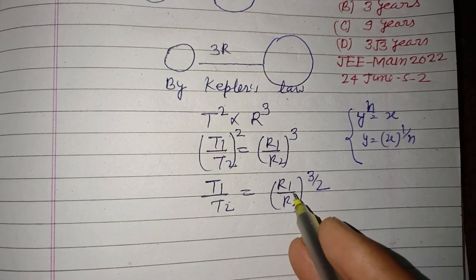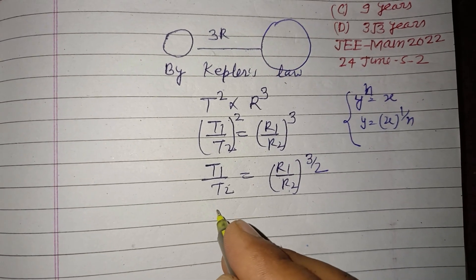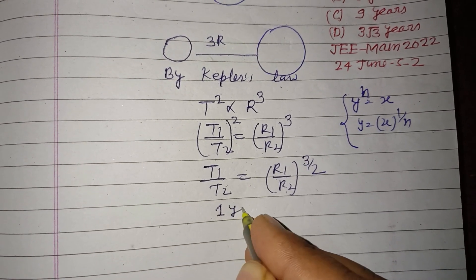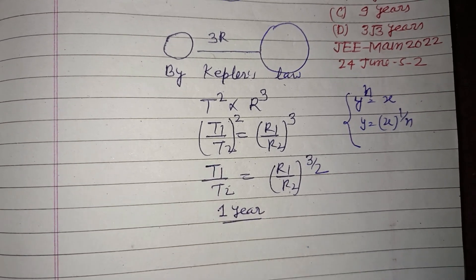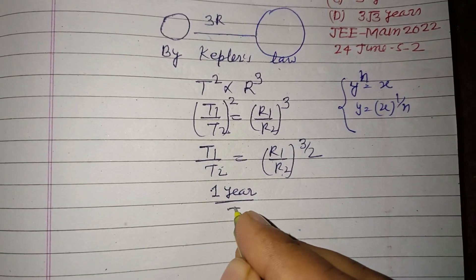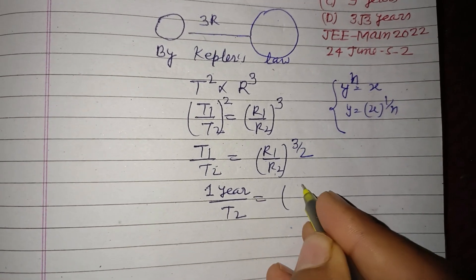We write T1 upon T2 equals R1 upon R2 to the power 3/2. Here T1 is one year because Earth revolves around the Sun in one year, and T2 is required. R1 is R...